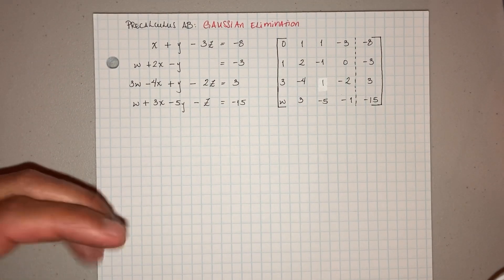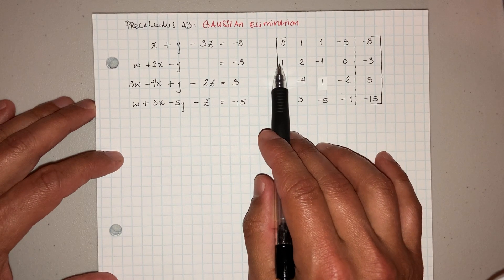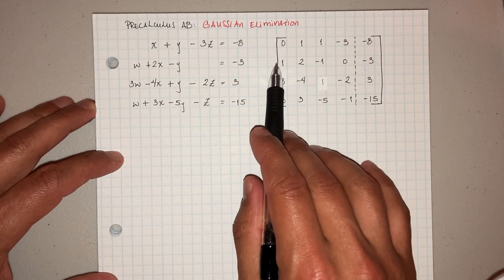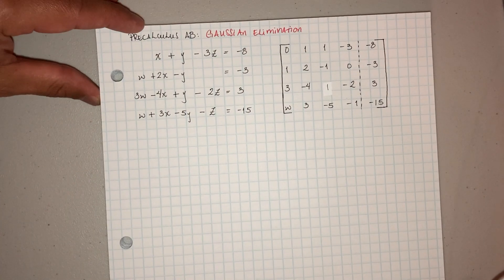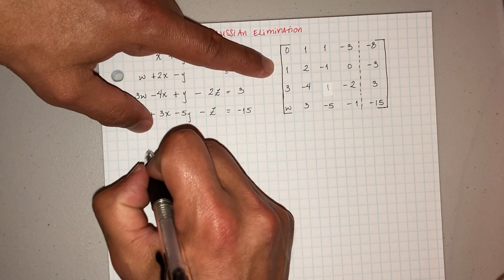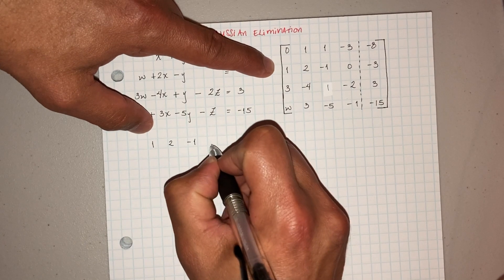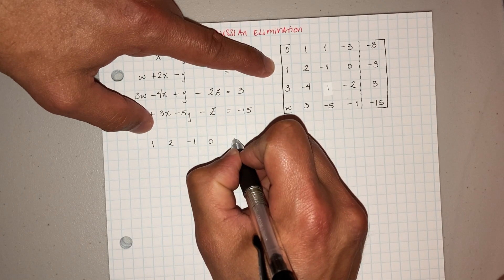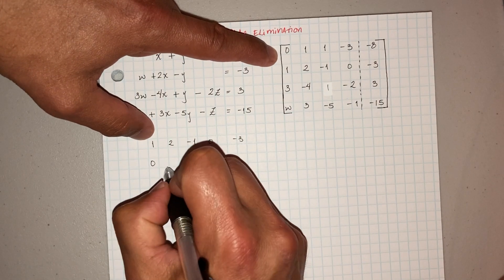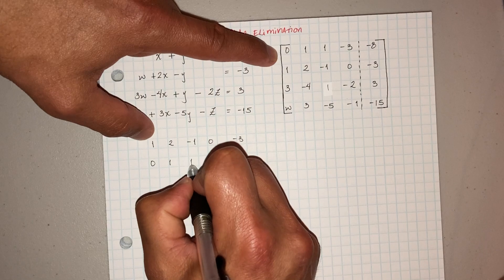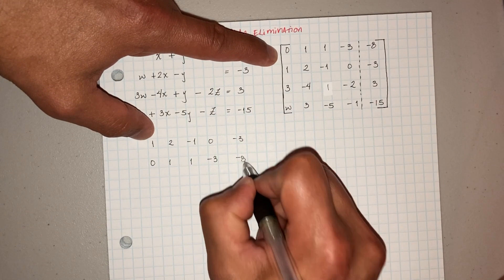Now we do a row operation. What we're going to do first is switch these two rows, so that this one becomes a 1. So this guy is going to become the top row: 1, negative 1, 0, and then negative 3. Then this guy is going to be row 2: 0, 1, 1, negative 3, and then negative 8.